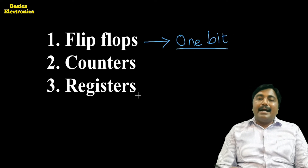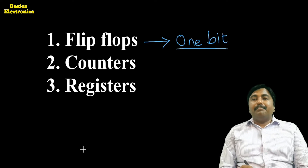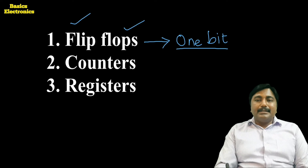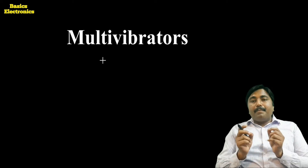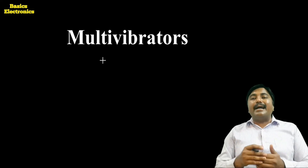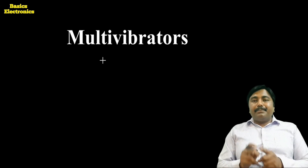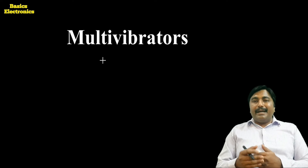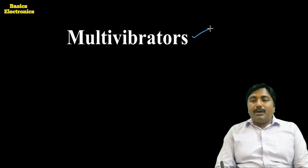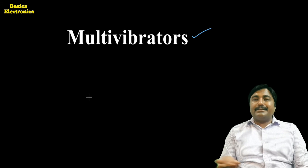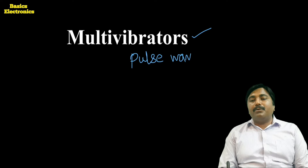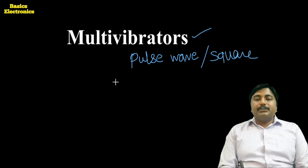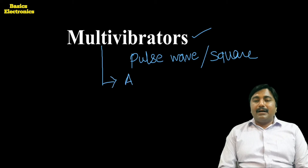For now we consider the flip-flop, whose basic concept is the one-bit memory cell. Before the one-bit memory cell, we have to see the multivibrators and why flip-flops are called so. The multivibrators are of three types. Like an oscillator — which produces a sine wave output — the multivibrator produces a pulse wave or square wave output.